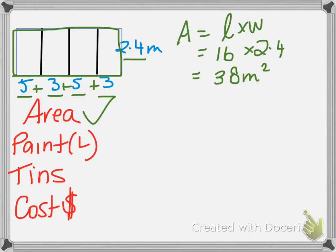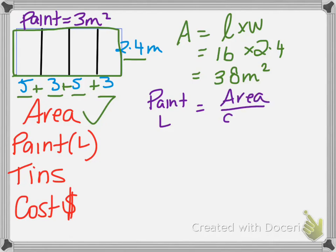If we need to then talk about, OK, well I need to get some paint. And your paint coverage will be given to you. So the paint is going to cover today, it's going to cover 3 square metres for every litre. So to find our paint in litres, we are going to say, right, how much is our area, divide it by our coverage, how much it's going to cover, and that will give us how many litres we need.